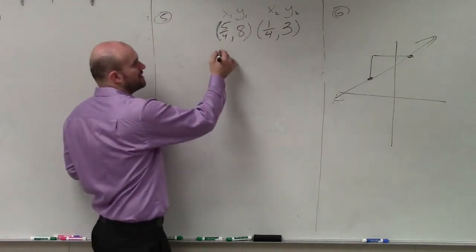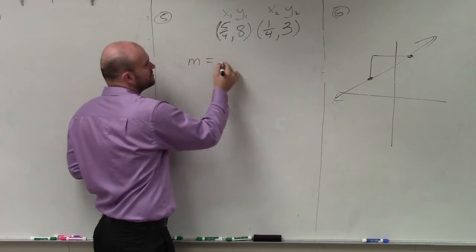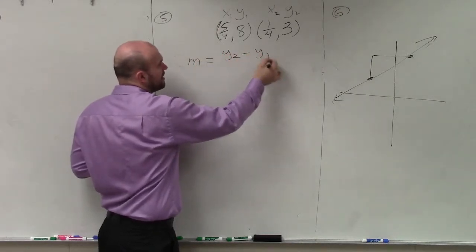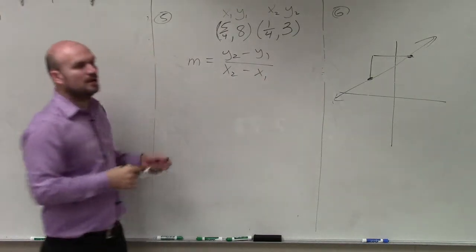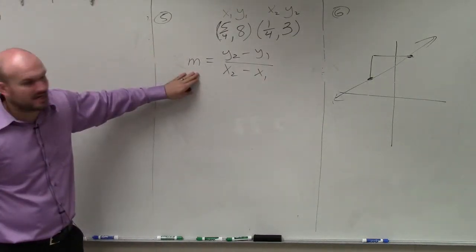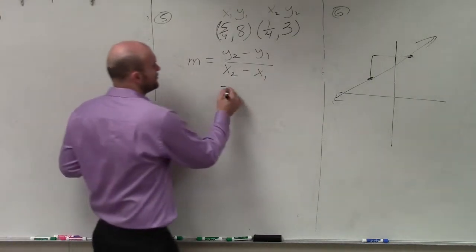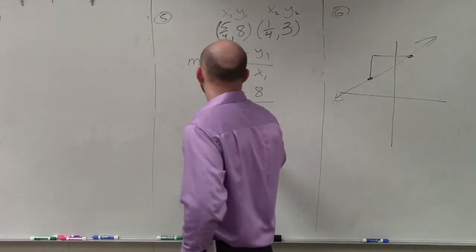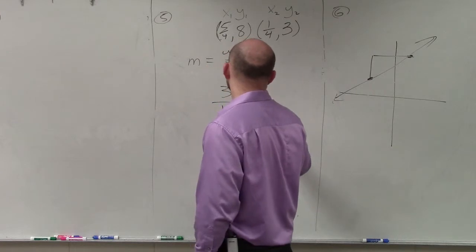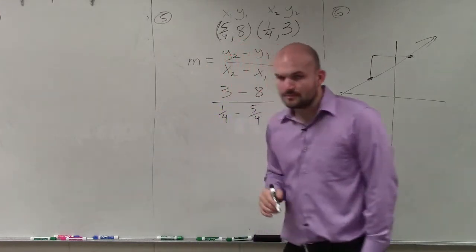Now if I want to find the change in the y-coordinates, I'm simply going to subtract them, y2 minus y1, and then x2 minus x1, where a lot of times we use m to represent our slope. So I do 3 minus 8 divided by 1 fourth minus 5 fourths. All right?